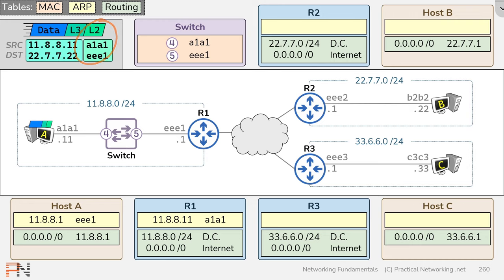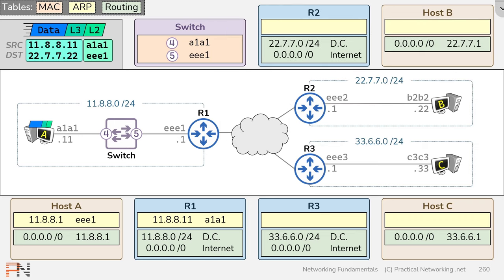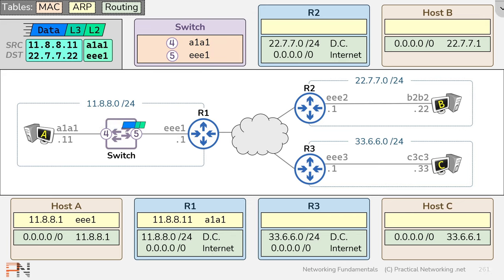Host A puts all of this onto the wire, where it arrives on the switch. The switch again tries to learn from the incoming frame — it arrived on port 4 with source MAC A1A1, which the switch already has in its MAC address table. There's nothing new to learn, so that entry is simply refreshed. Then the switch looks at the destination MAC address and determines this frame should be forwarded out port 5, sending it toward router 1.